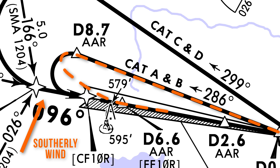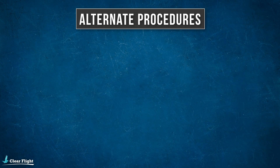So that's a normal procedural approach, and you can expect to fly one during your EASA or UK instrument rating test. But before we go, we've got one last type of procedural approach to have a look at, and that's the alternate procedure.